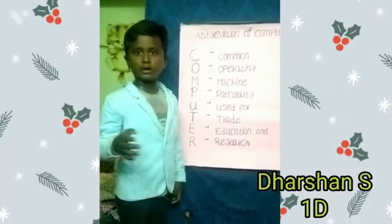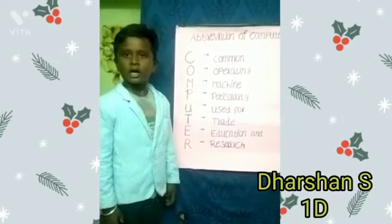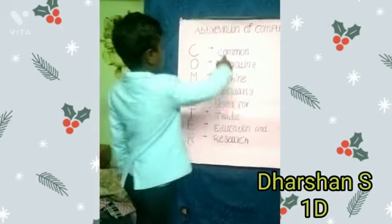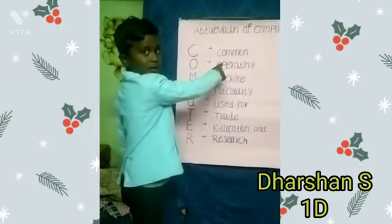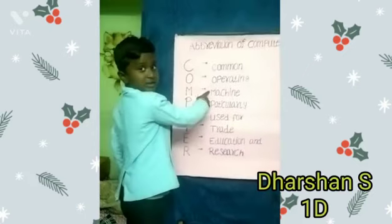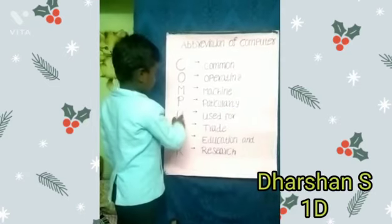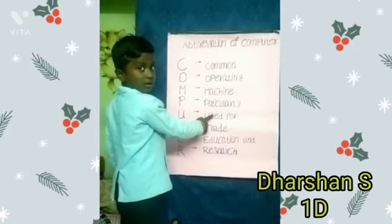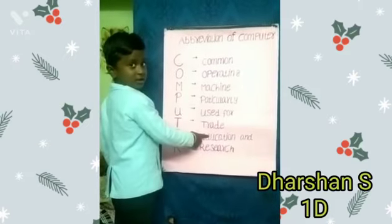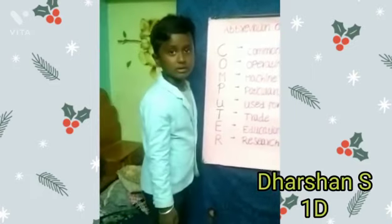Hi, good morning everyone. I am Darshan. I am going to say about the full form of COMPUTER. C for Common, O for Operating, M for Machine, P for Particular thing, U for Used for, T for Trade, E for Education, and R for Research. Thank you.